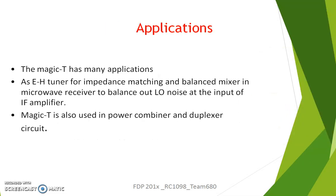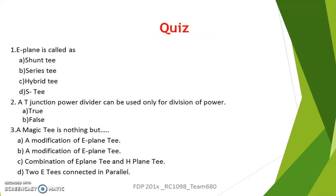These are a few applications of the Magic T: it can be used for impedance matching, as a balanced mixer and microwave receiver, as a power combiner, and in a duplex circuit.